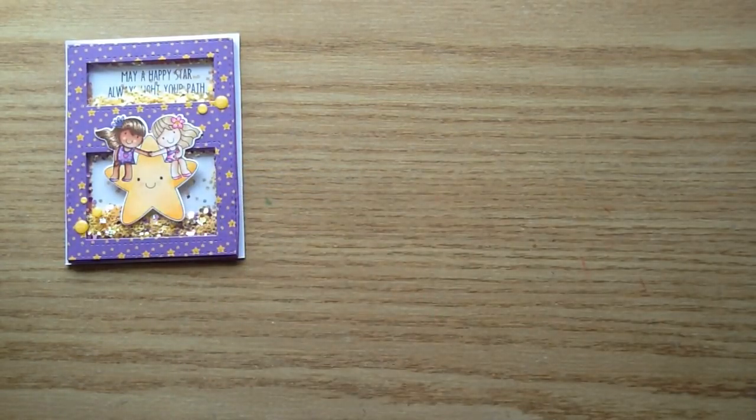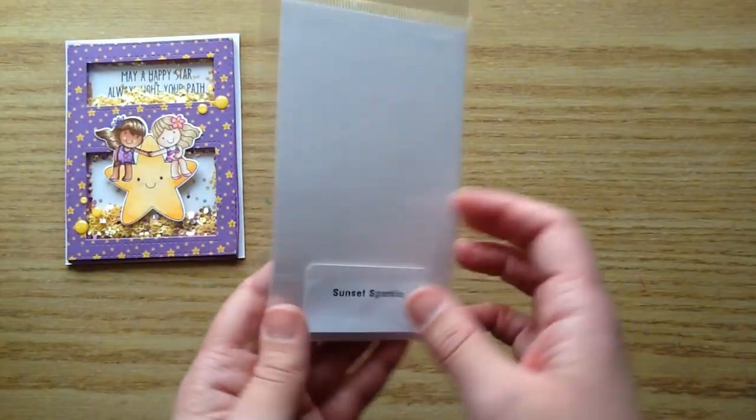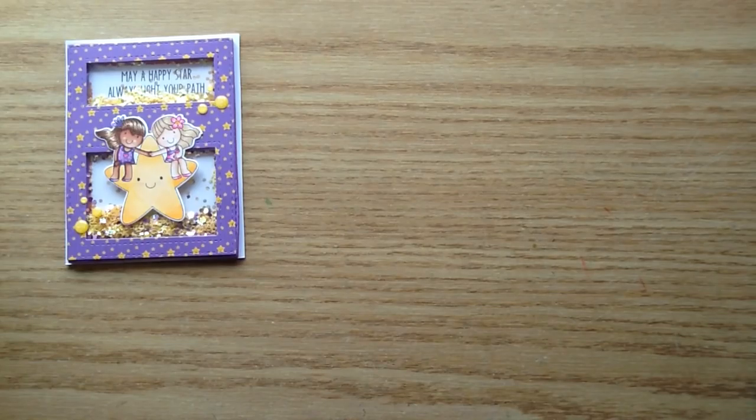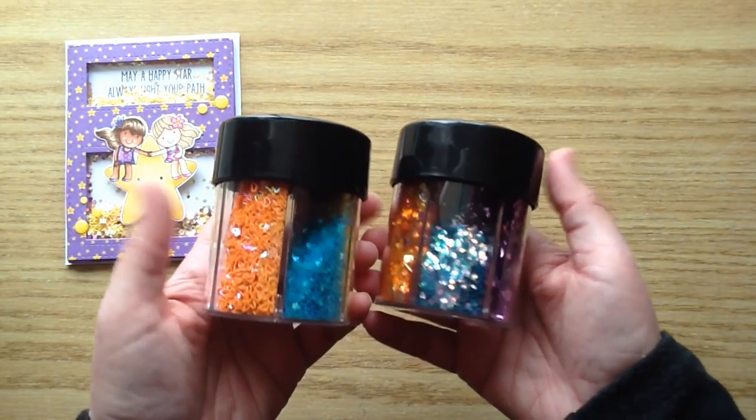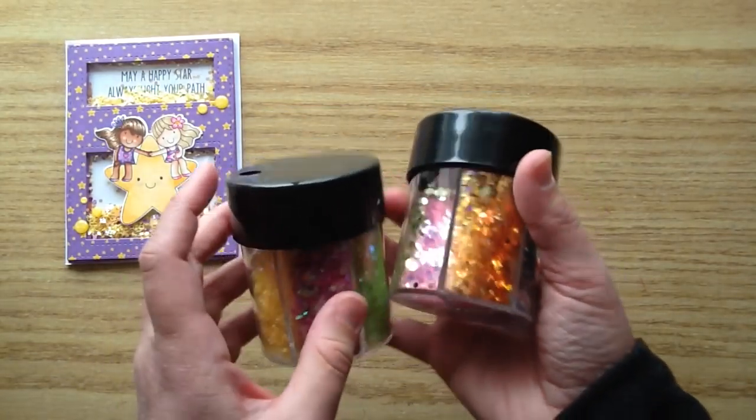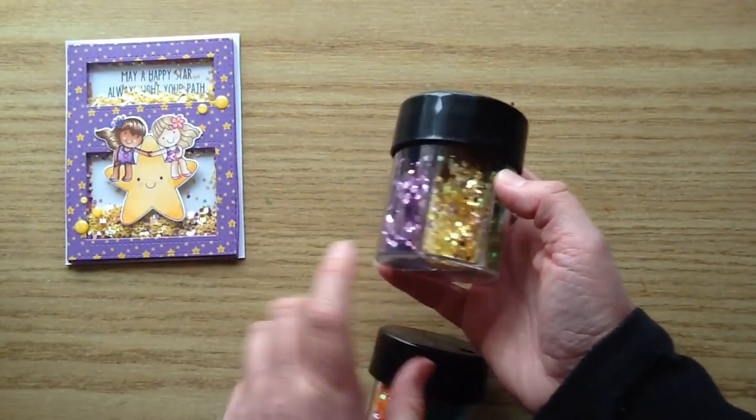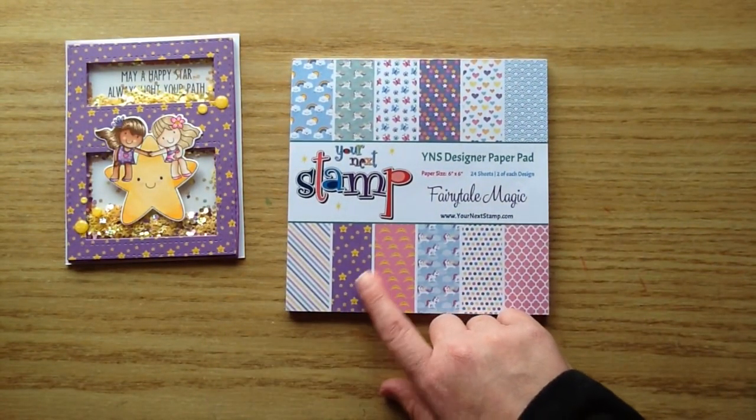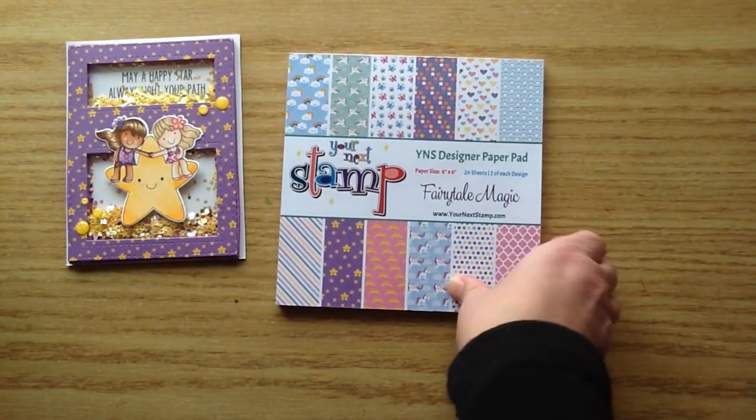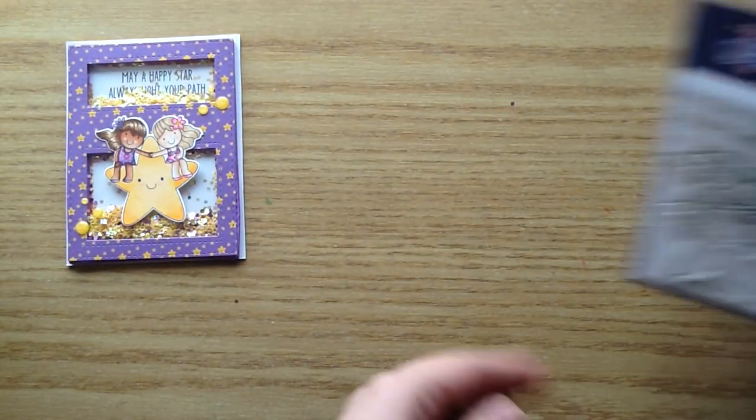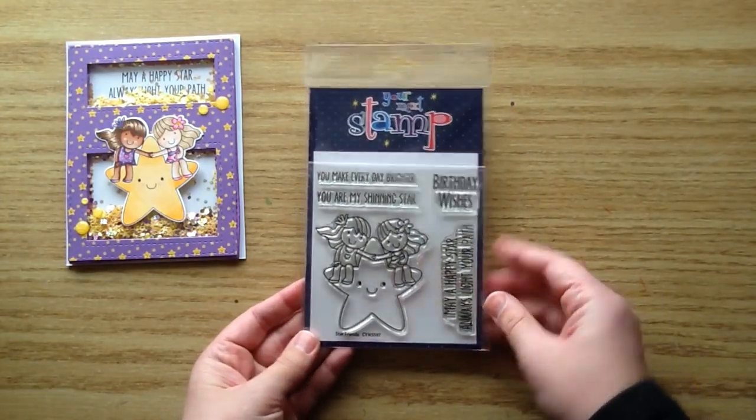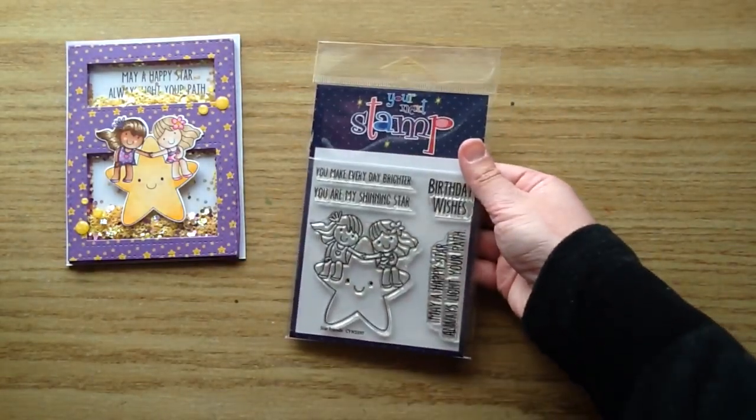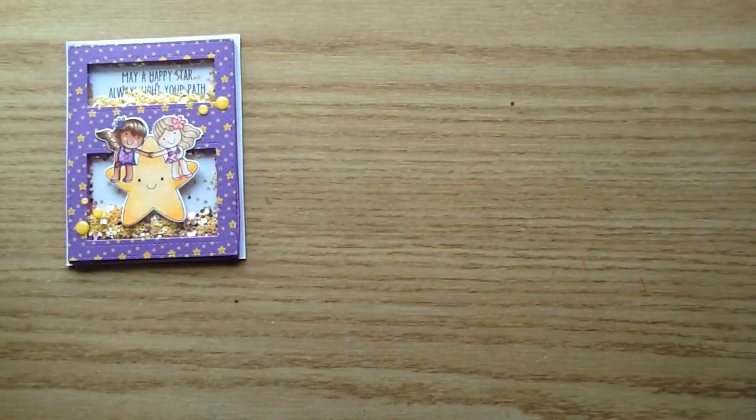So I used the Your Next Stamp black olive ink and the wire snips to cut apart the coordinating dies. I used these sunset sparkle gumdrops. I just used the yellow ones in the three different sizes. I used these glitter pots that I purchased at Michaels. I love these so much, and I've had them forever. And they never run out. I just used the yellow, purple, and that one with the stars in it. Then I'm going to use the new Your Next Stamp fairy tale magic paper, and it coordinates so cute with this stamp set because it has that little star paper with the little smiley face on it. I also used this stamp set. This is called Star Friends, and I used the sentiment that says, May a happy star always light your path. And I used the coordinating die to trim that out.